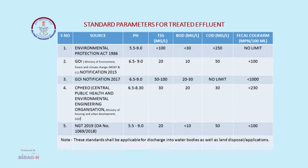There are some parameters which we need to fulfill before discharging water into streams or underground. The initial Environmental Protection Act of 1986 was again notified in 2015 with very strict parameters. Because of these strict parameters, some industrialists went to the government and requested to dilute these parameters, as they were not able to achieve them.